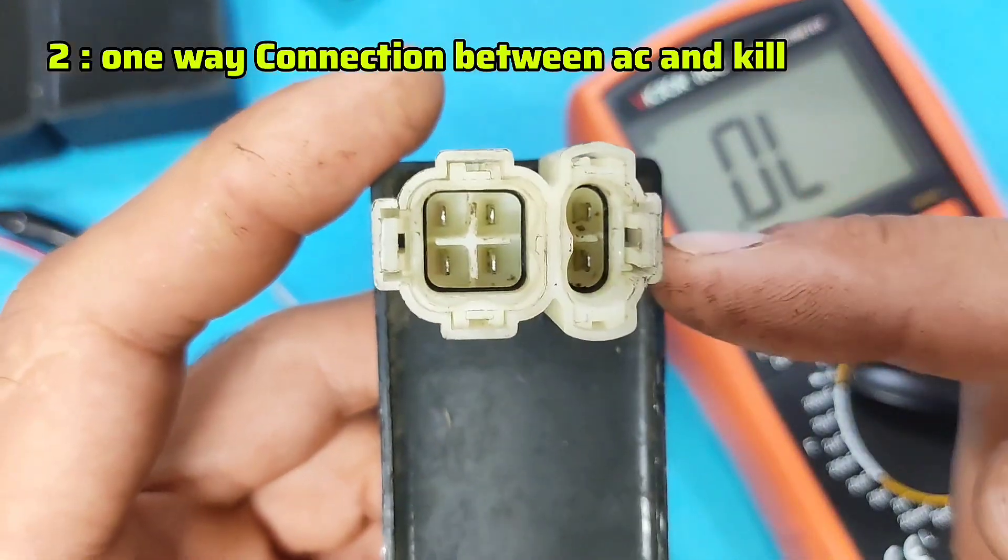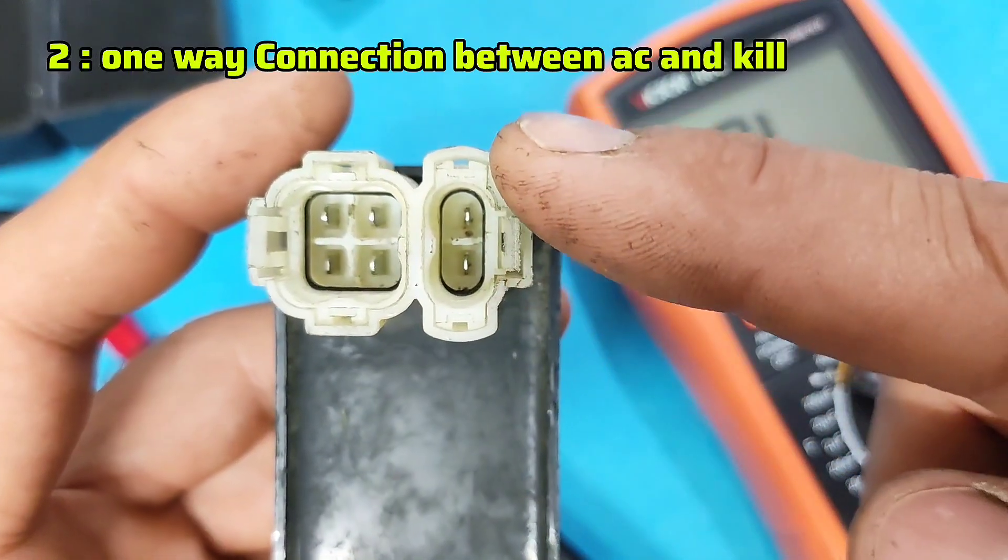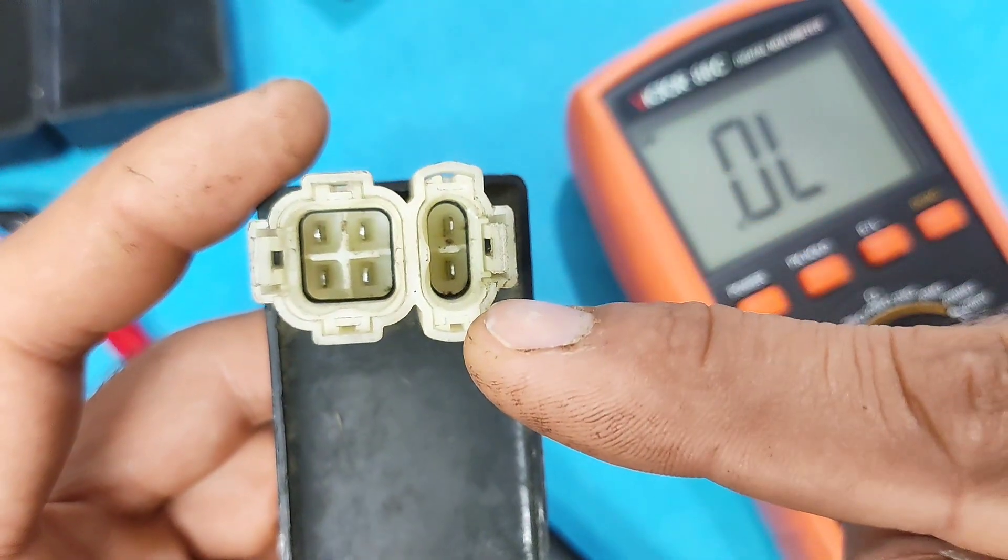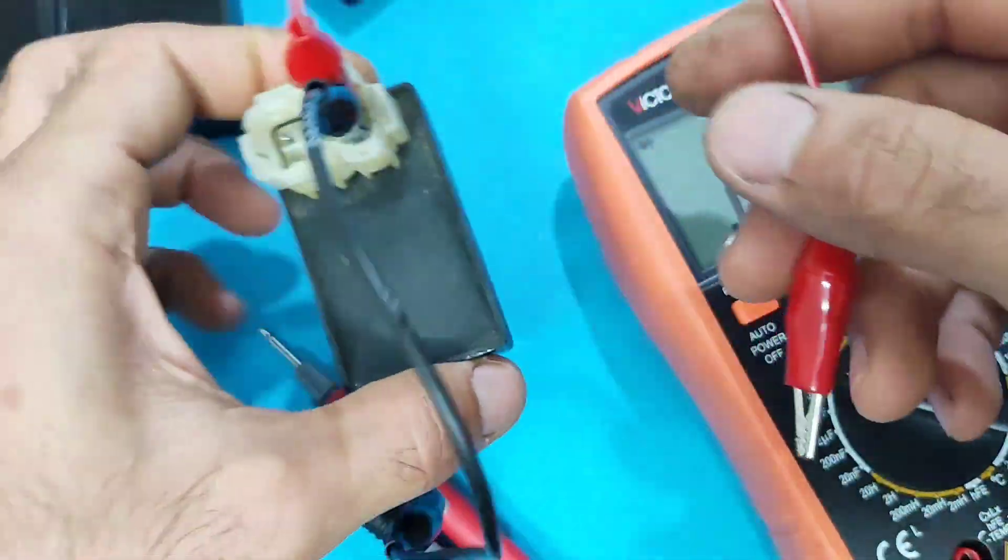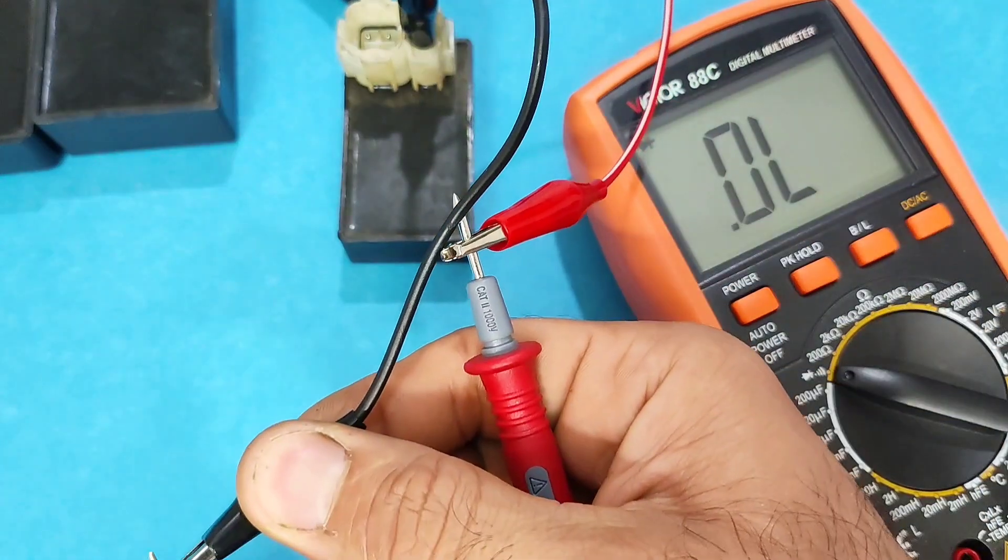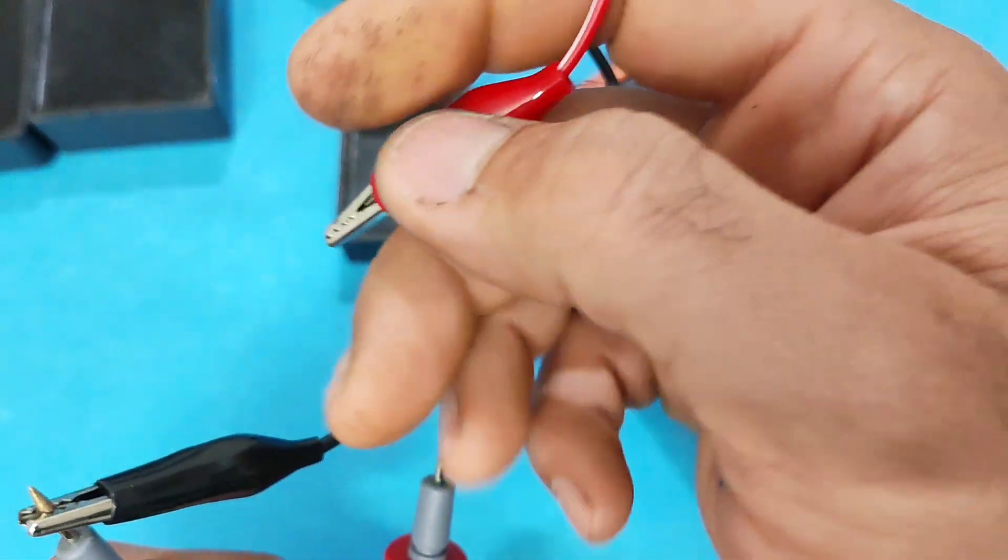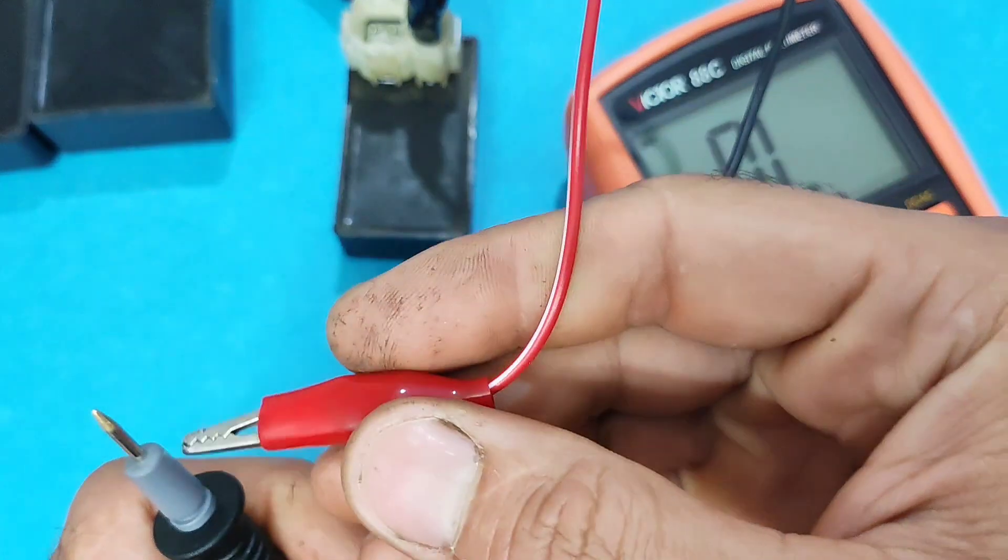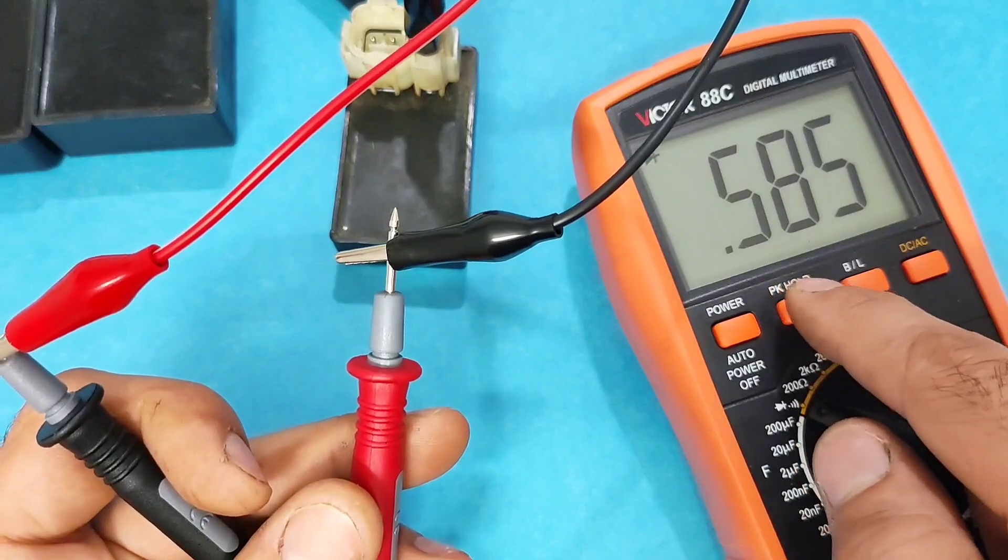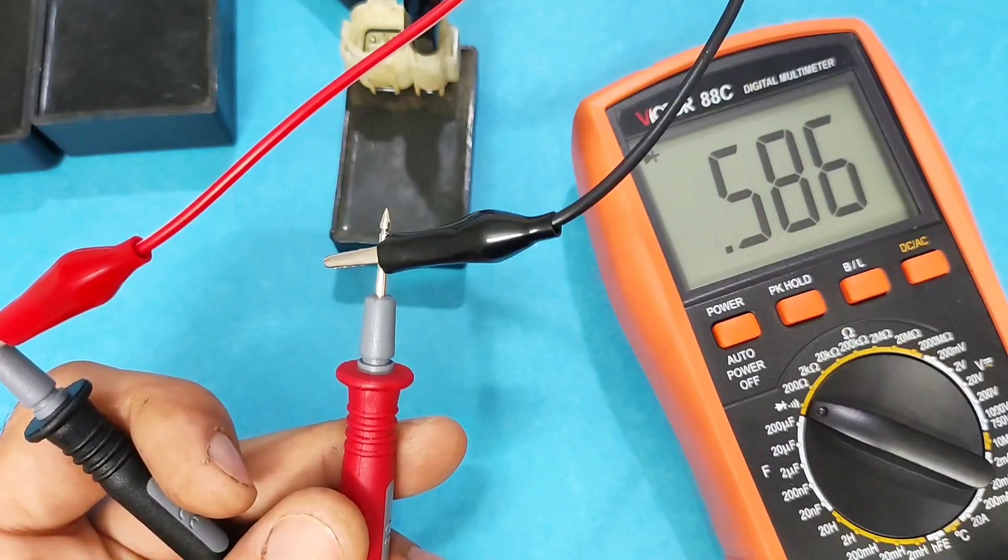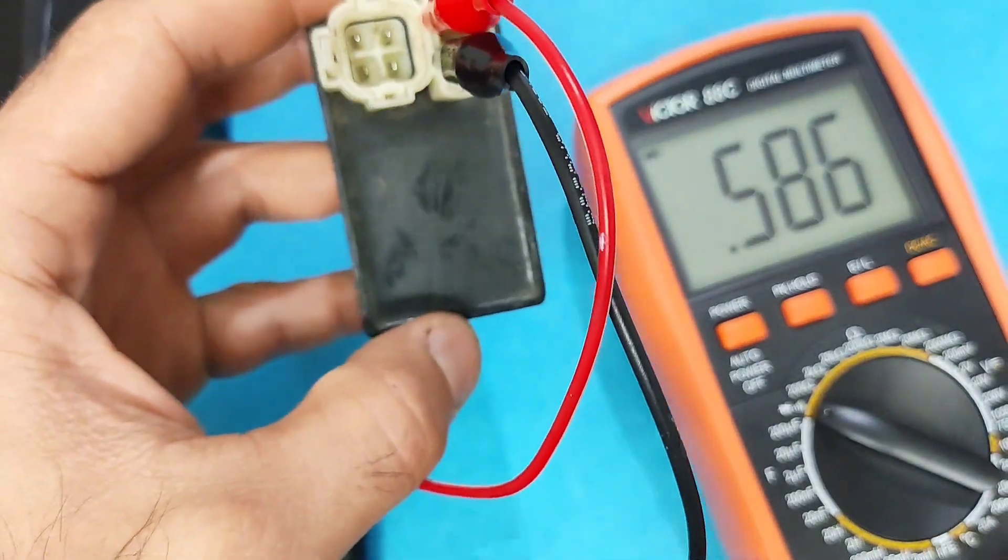The next item you need to check is the main power pin and the kill switch. It should show resistance from one side. No function. Switch the probes. We have resistance value here. Note that this connection should be one way. This CDI is completely healthy and functional.